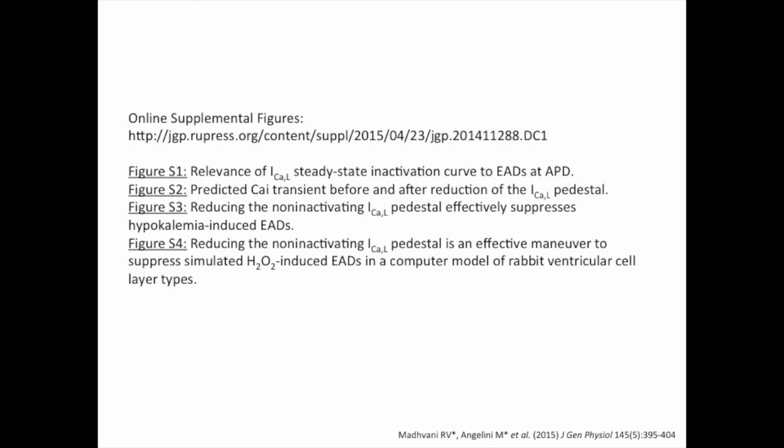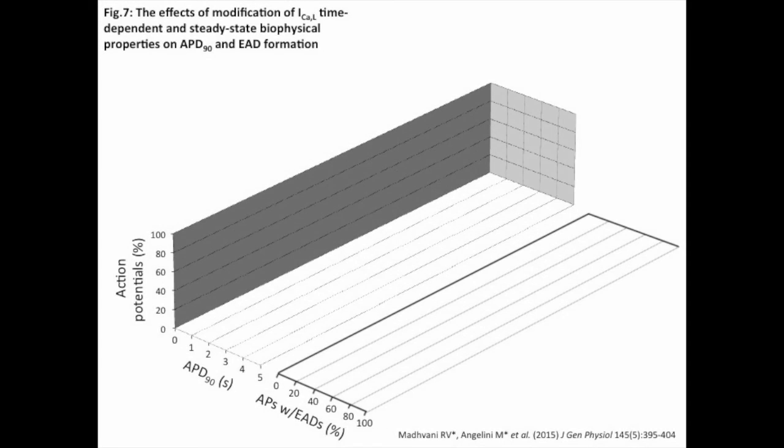In the online supplement to this article, we are including figure S1, relevance of the L-type calcium current steady-state inactivation curve to EADs and action potential duration; figure S2, predicted calcium transient before and after reduction of the L-type calcium current pedestal; figure S3, reducing the non-inactivating L-type calcium current pedestal effectively suppresses hypokalemia-induced EADs; figure S4, reducing the non-inactivating L-type calcium current pedestal is an effective maneuver to suppress simulated hydrogen peroxide-induced EADs in a computer model of rabbit ventricular cell layer types. Back to the main article.